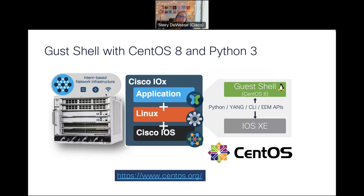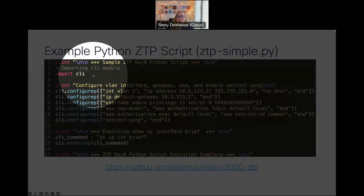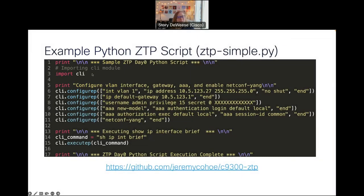How this works is we download a Python file and we can actually run that Python file directly on our Catalyst switch. In this case we're using GuestOS 8 to actually run our Python file, which we'll take a look at next. Here's an example of a simple Python file that we can use for zero touch provisioning. You can see we're just importing one module, or one library, and from there we're actually able to go in and configure our device directly.